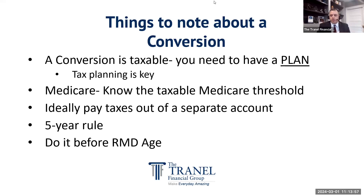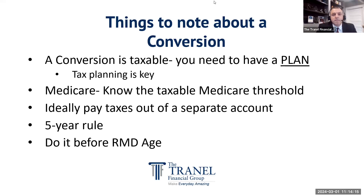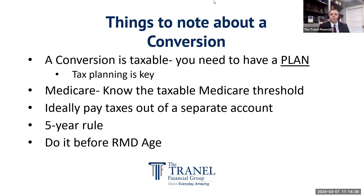We want to look at what we call a five-year rule. This is not a short-term strategy where you convert money and take it out in one year. Ideally, you don't need to touch this money before age 59 and a half, and we don't want to touch that money for at least a five-year period. If you had to touch it prior to the end of that five-year period, the gains would be subject to some penalty.